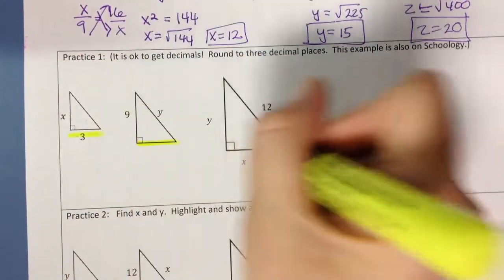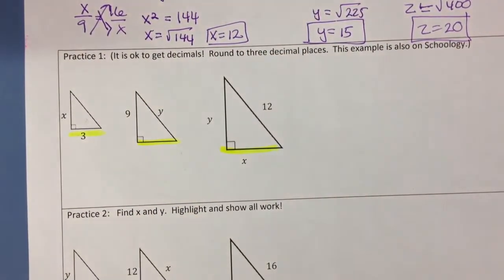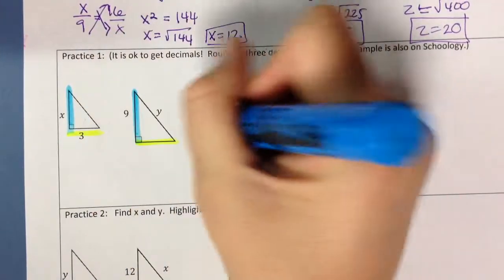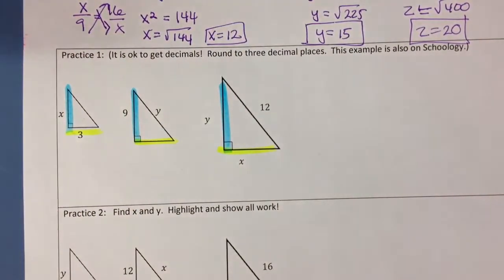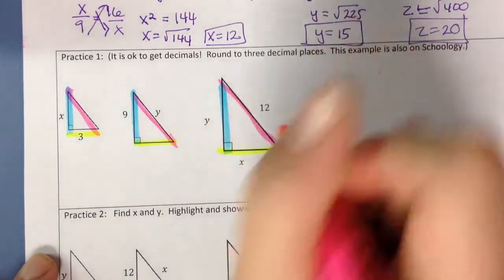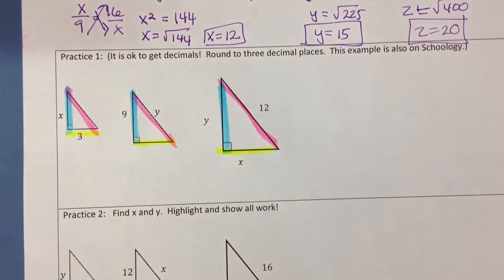So I'm going to do the same thing I did before and highlight my corresponding sides. It just helps me a lot. Alright, and we said again, all the triangles are going to be similar.